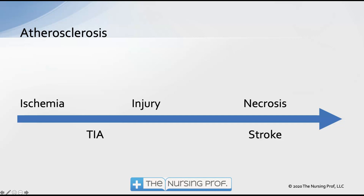Eventually we end up with necrosis. Injured cells may recover somewhat or be replaced by healthy cells. However, once we reach necrosis, we have dead tissue in the brain — or in the heart in the case of acute coronary syndrome. That dead tissue is not coming back; it will be replaced by scar or fibrotic tissue, which is not functional and cannot conduct electrical impulses or participate in brain processes.